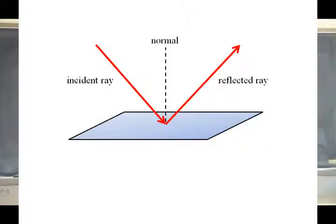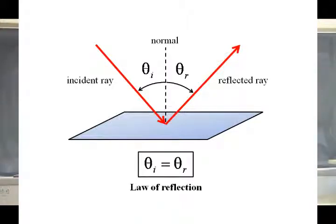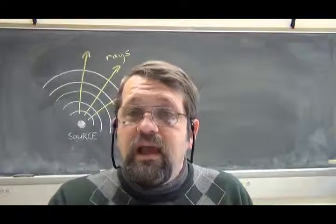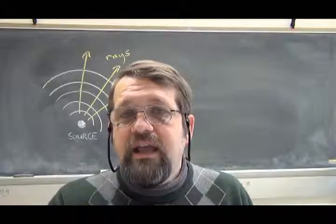We define angles: theta sub i, giving the angle at which the incident ray approaches the surface, and theta sub r, the angle between the normal and the reflected ray. The law of reflection can then be stated in very simple terms: the angle of incidence, theta sub i, is equal to theta sub r, the angle of reflection. That's the law of reflection. There's also a subsidiary condition: the normal, the incident ray, and the reflected ray all lie in the same plane.